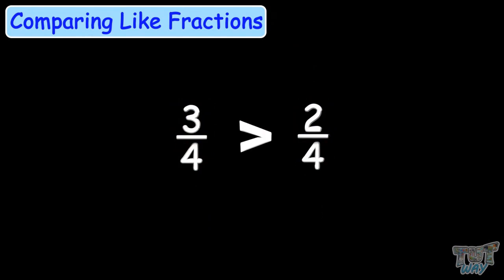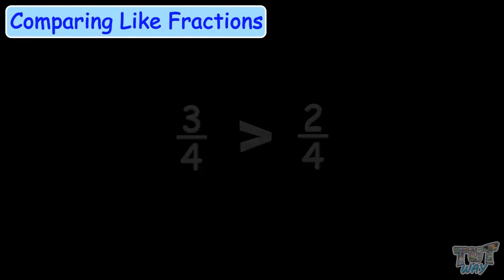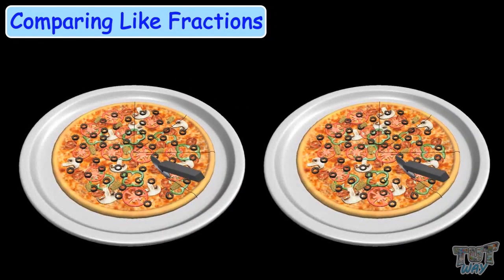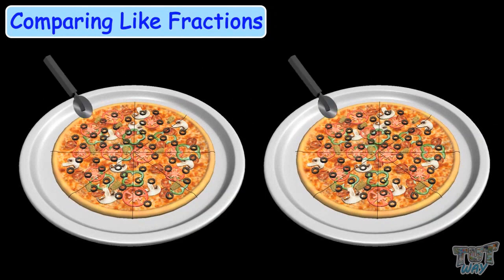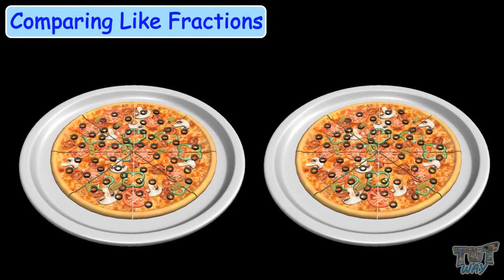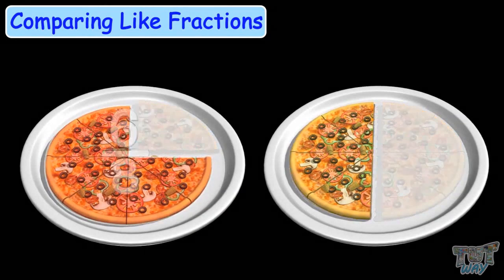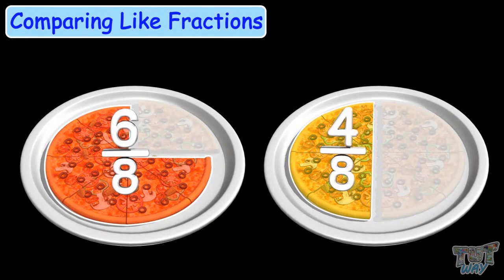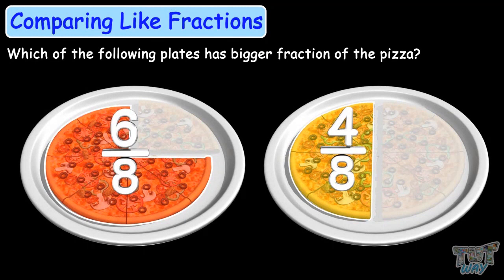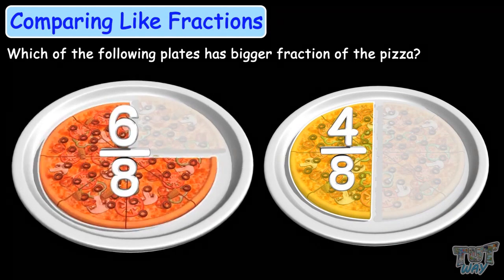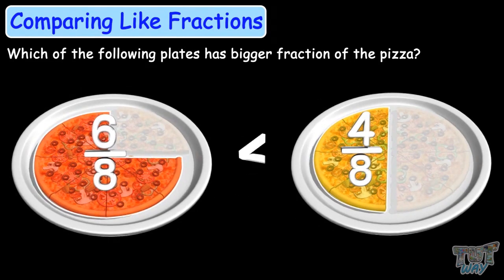Here we have another example. Your mom cooks a pizza and cuts the pizza into eight equal parts. She will either give you six-eighth pizza or four-eighth pizza. Now in which case will you get more pizza? You can visually compare that 6-eighth pizza is more than 4-eighth pizza.